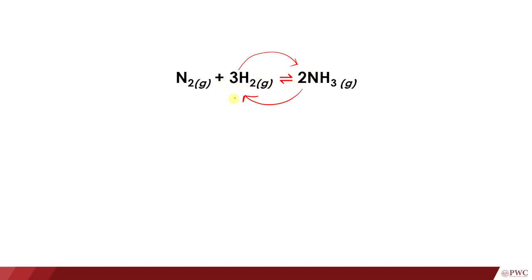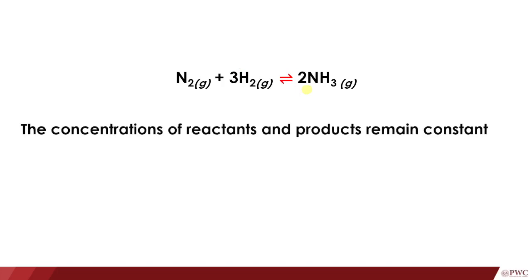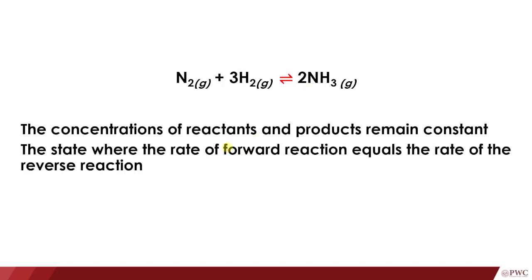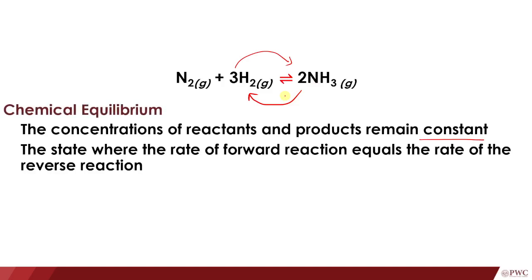Over time, there will be increases and decreases in the concentrations of these substances, but eventually the concentrations will remain constant. That's because the rate of the forward reaction equals the rate of the reverse reaction. The forward and reverse reactions are still ongoing, but the concentrations remain constant because the speed of formation of the product equals the speed of its decomposition. We call this state chemical equilibrium — equilibrium means balance.